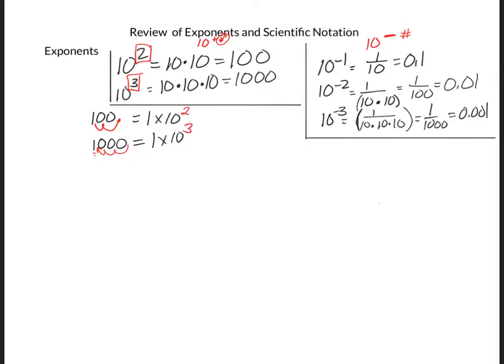On the other hand, if we have numbers that are less than 1, we're going to see a number like 0.1. You're going to go forward one decimal place — the decimal is on the other side of the 1 — and we get 1 times 10 to the negative 1. And if we look at 0.00001, we'll move the decimal point forward five spots so that it's on the other side of the 1, and that would give us 10 to the negative 5.